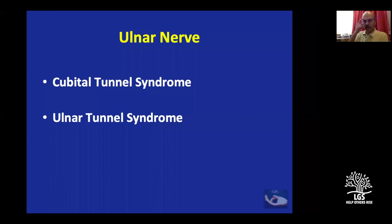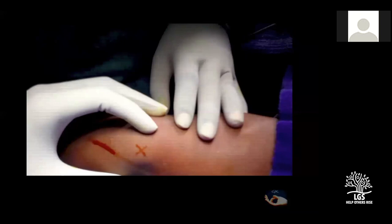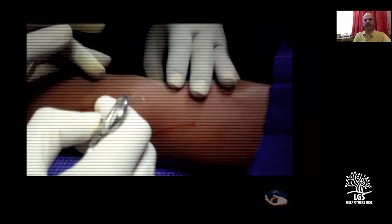One more surgical aspect of ulnar nerve palsy is decompression neuropathy. The commonest sites are the cubital tunnel and the ulnar tunnel at Guyon's canal. Options for the cubital tunnel include medial epicondylectomy and anterior subcutaneous transposition of the ulnar nerve.